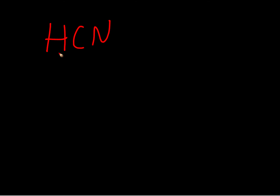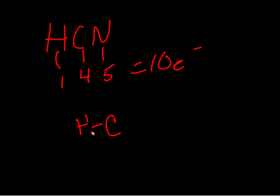One more example with a triple bond — HCN. Hydrogen has one valence electron, carbon has four, nitrogen has five, so we have ten electrons in our structure. Since carbon is present, that's our central atom. Hydrogen can only be singly bonded to carbon, and we'll try a triple bond to nitrogen. Counting: two, four, six, eight around carbon — that satisfies carbon's octet rule. We only have six around nitrogen, so we add a set of lone pairs to give us ten. This concludes our video on Lewis structures.